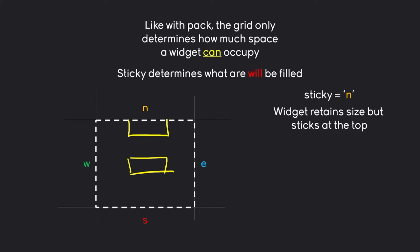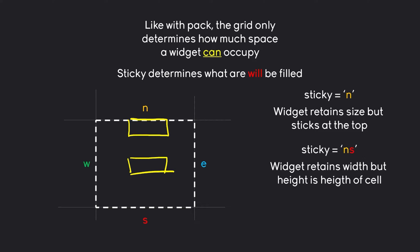Note here that the size of the widget hasn't changed. However, when we define two arguments, like north and south, in that case, the widget is going to retain the width but is going to occupy the entire height of the cell. Our widget is going to stick to the north and to the south, which means the height of the widget is going to occupy all of that space.